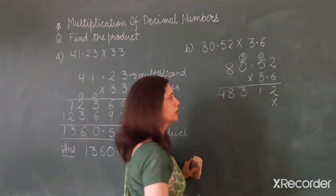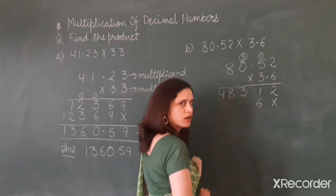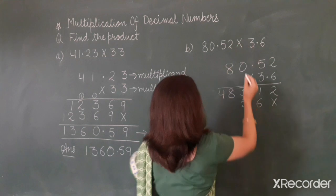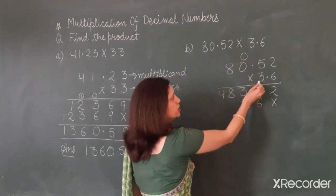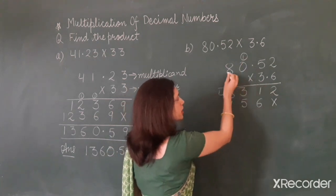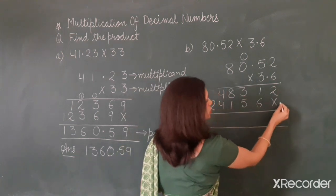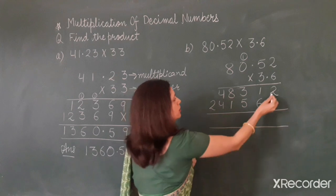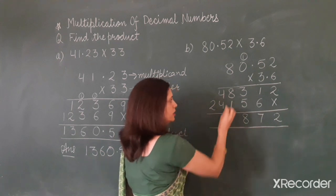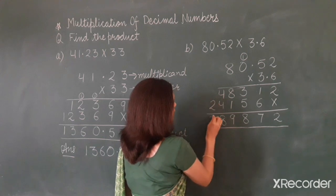So at the ones place we put a zero or cross. Now multiply by 3: three twos are six; three fives are fifteen, write down five and one will carry over; three zeros are zero, zero and one is one; three eights are twenty-four. Now we will add these two partial products: two; one and six is seven; three and five is eight; eight and one is nine; four and four is eight; and two.